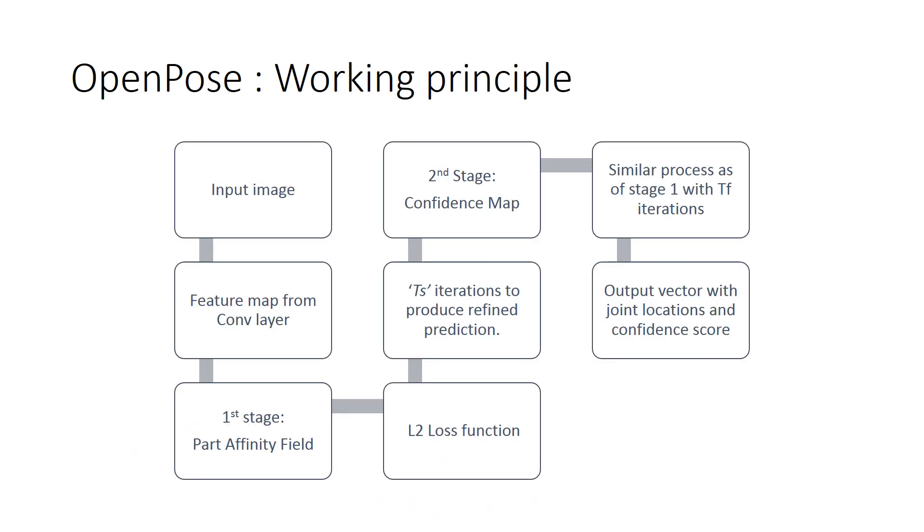This is the working principle of OpenPose. The features from the input image are extracted and fed to the two-stage network. The first stage network will produce a part-affinity field. The part-affinity field will produce a connection of the limbs. It outputs a two-dimensional vector representing the orientation and the location of the limb. It provides the association of the limb. After every iterative stage, the part-affinity field is concatenated with the input feature map and runs for a number of iterations to produce a refined prediction. To guide the network, an L2 loss function is used between the estimated predictions and the ground fields.